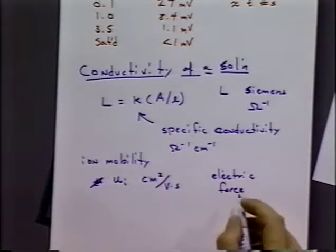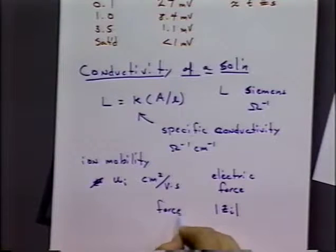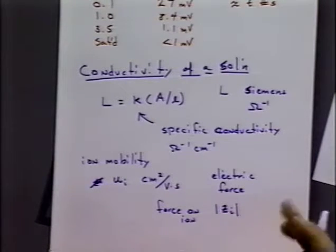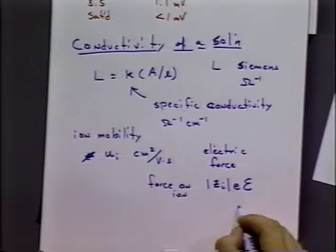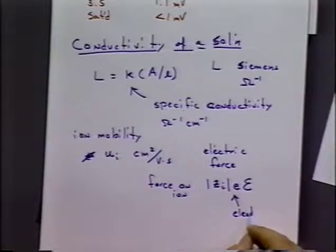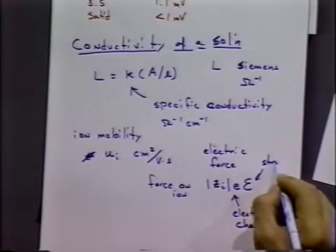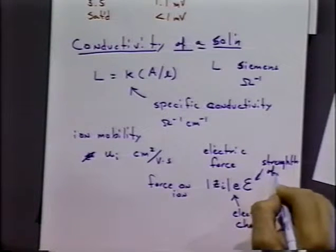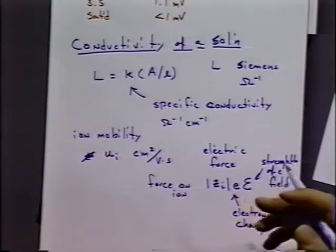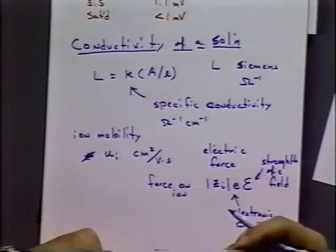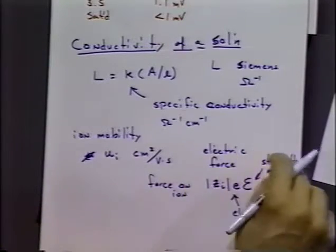And the amount of force on a particular ion will be dependent on the charge of the ion. So that would be the absolute value of the charge on the ion. And the two terms: one is the electronic charge, or the charge on an electron, and the strength of the electric field. So you can think, the more charge we've got in an ion, and the higher the electric field, the more mobility we'll be expecting out of our ion. We're going to be able to drag that ion along through the solution.